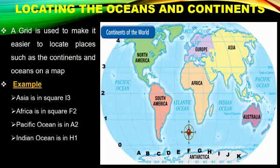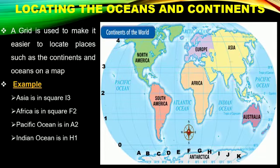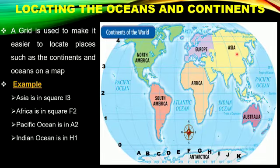Locating the oceans and continents through a grid. A grid is used to make it easier to look at places such as the continents and oceans on a map. Now students, I want you to go through the examples. If you see the continent Asia, it is in the square I3. I am joining I with 3 and at the point of intersection, you can easily find the continent Asia.